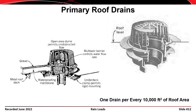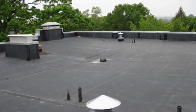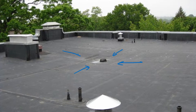Interior roof drains have a cage over them to keep larger debris out, and a weir around them to control the flow rate of water. They open up with a drain pipe at the bottom. Typically, one drain is required for every 10,000 square feet of roof area. You can see the roof sloped down toward the drain in all four directions.